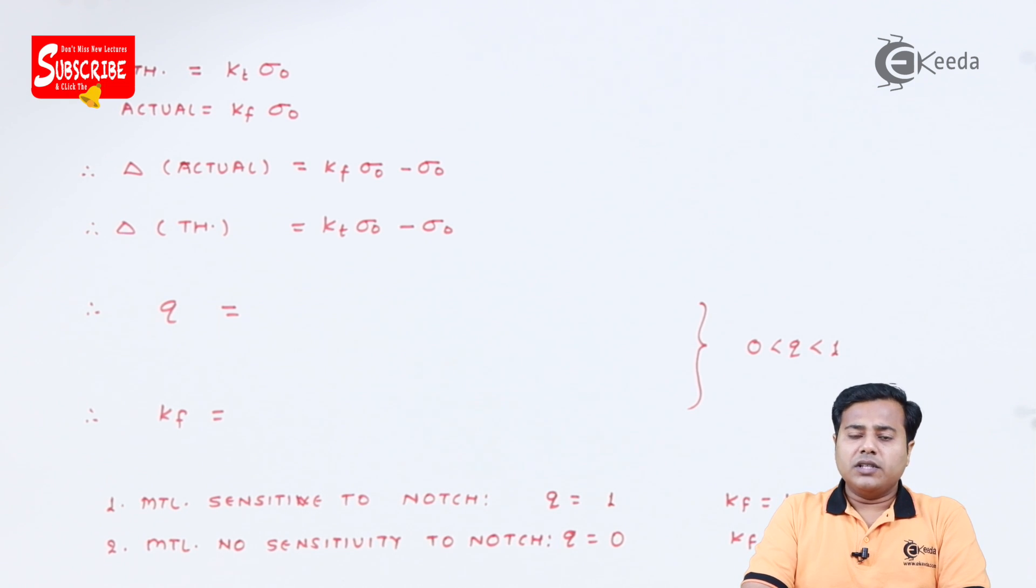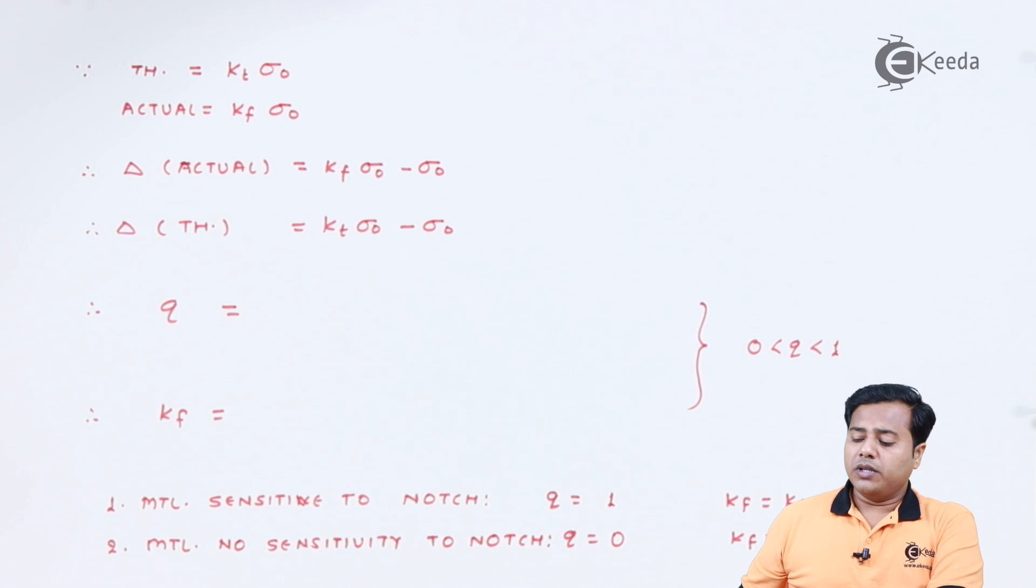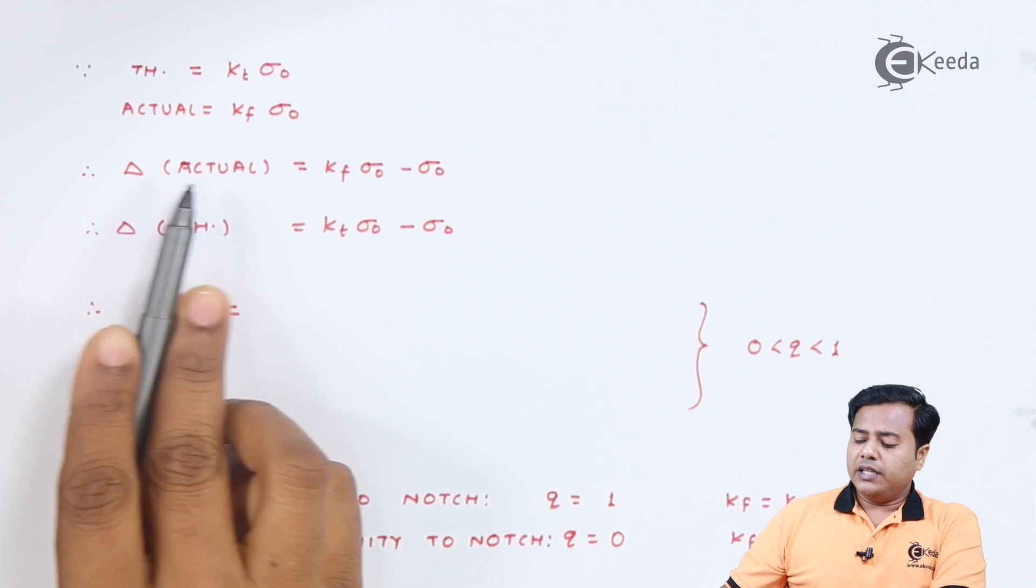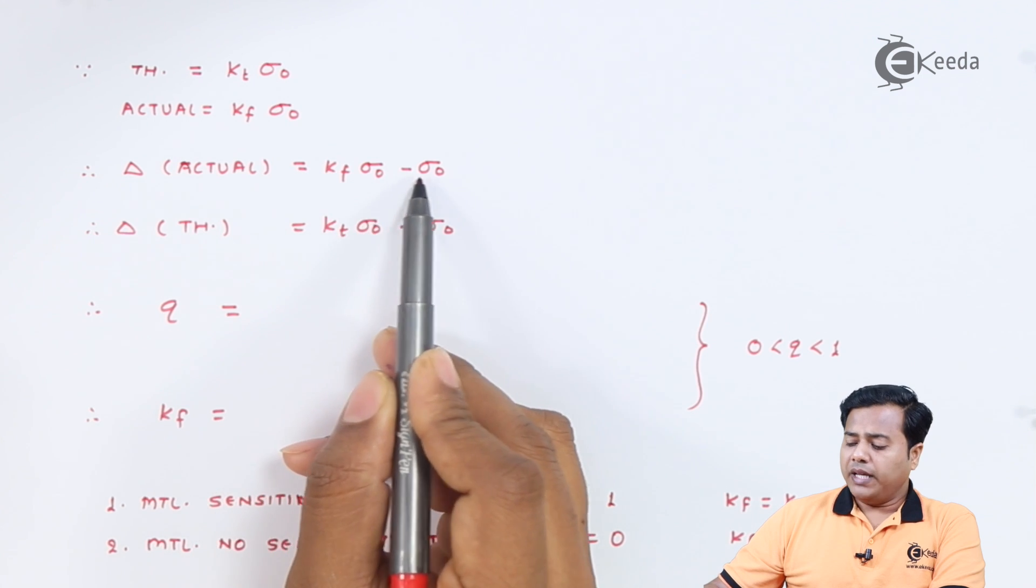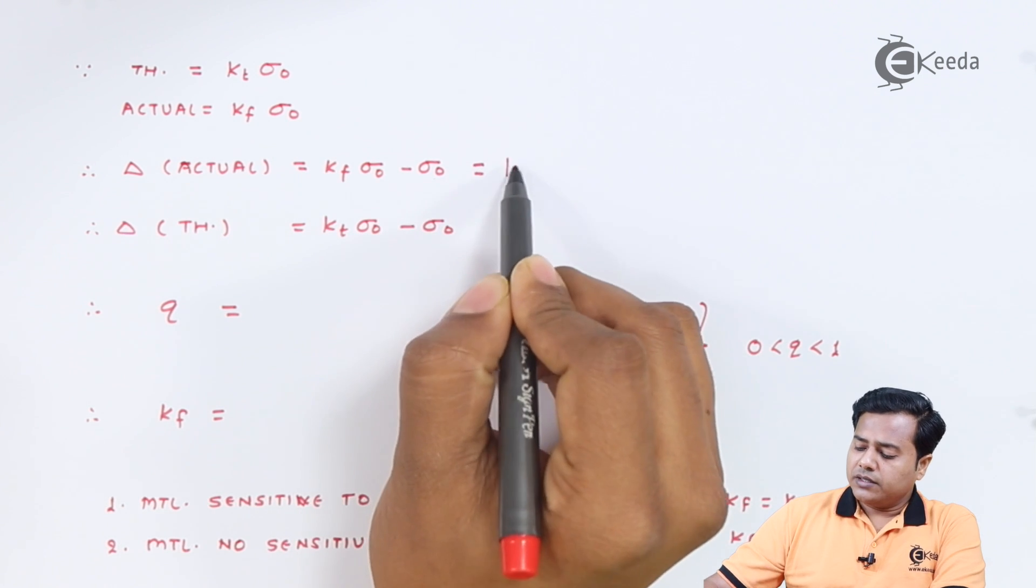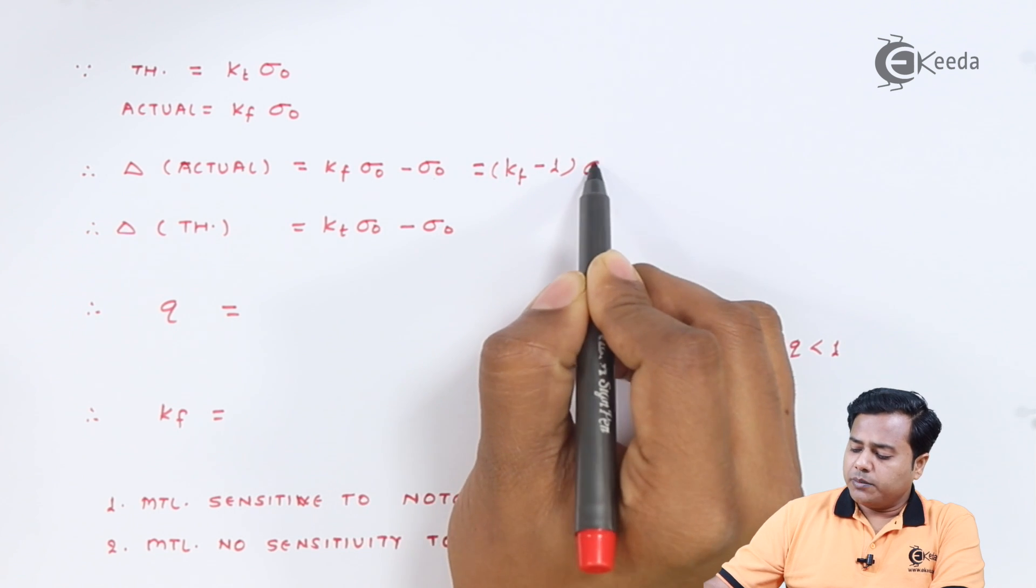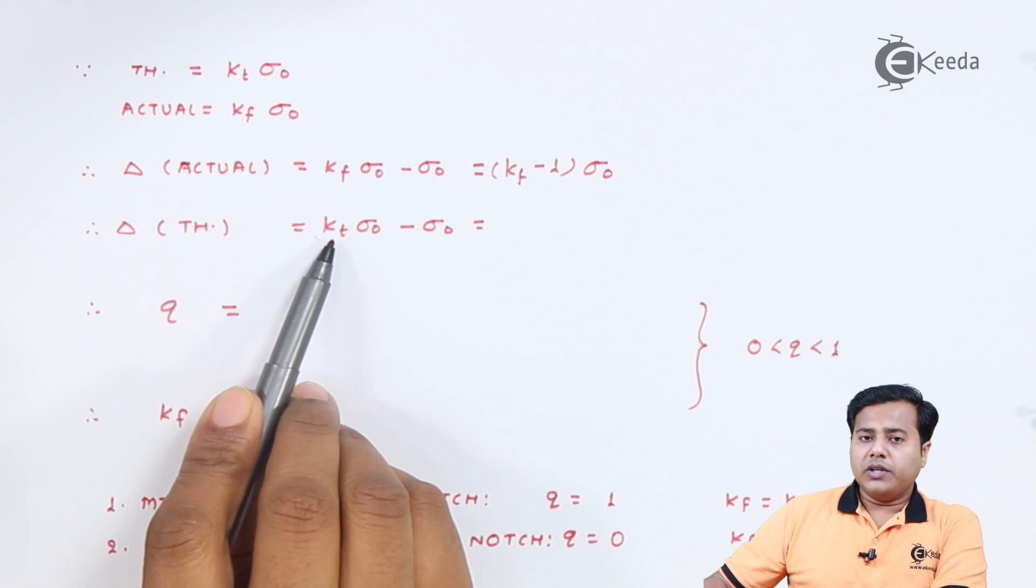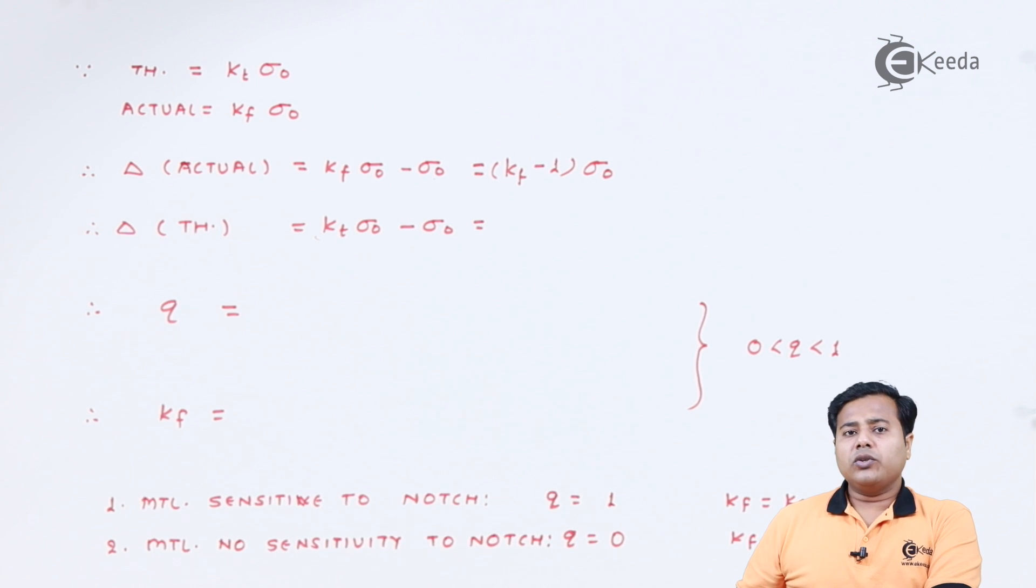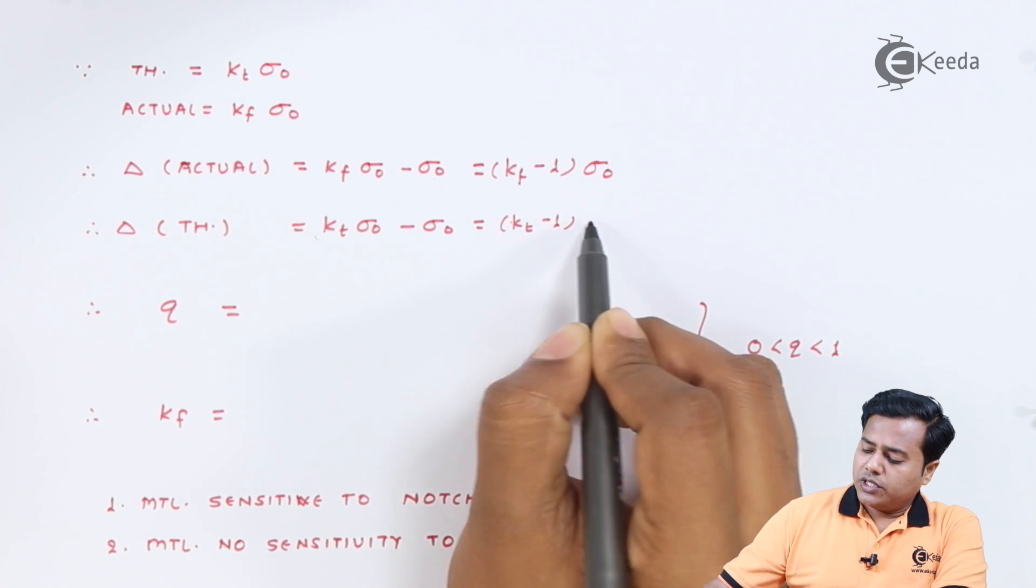So we know that theoretical value was Kt into the maximum stress possible, and the actual was Kf into the maximum stress possible. And therefore, the increase in actual one was the Kf into maximum minus the maximum, and that makes it (Kf - 1) times sigma naught, whereas the theoretical increase is actually the Kt because it is only based on the stress concentration factor, so it makes it (Kt - 1) times sigma naught.